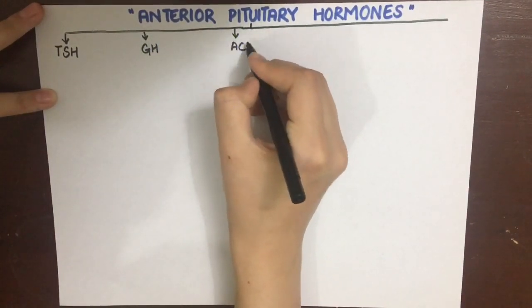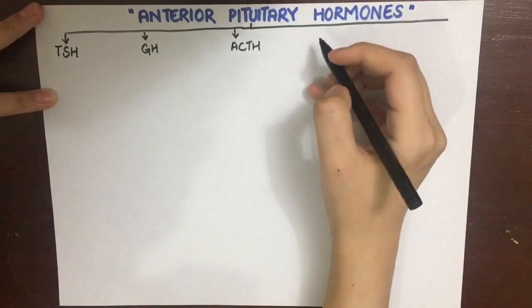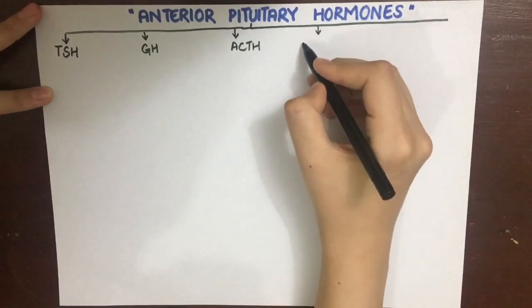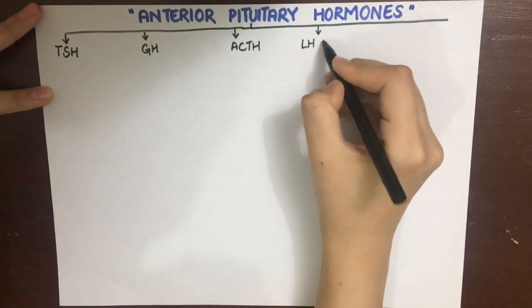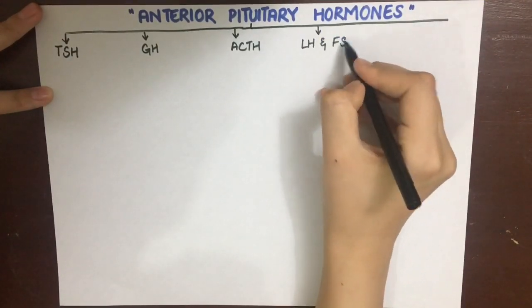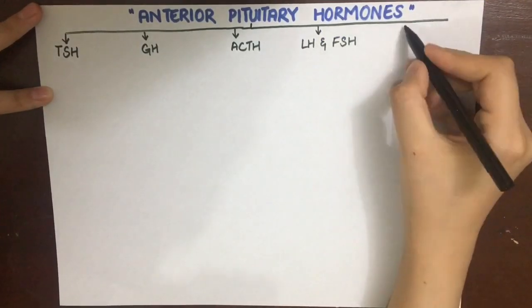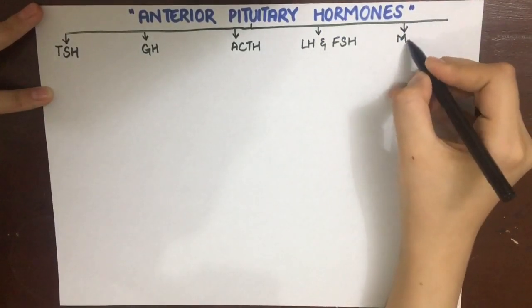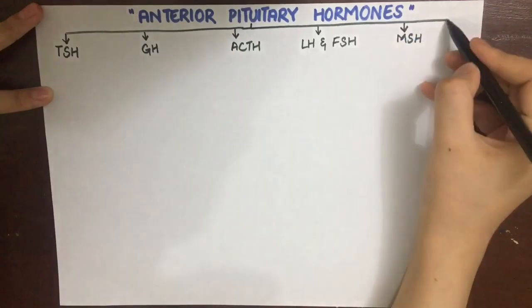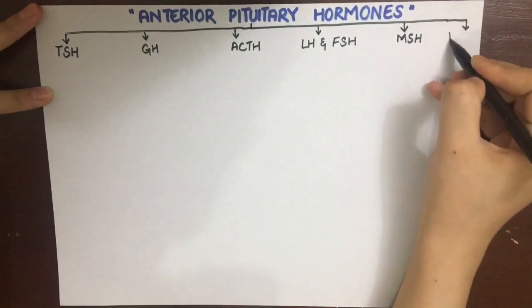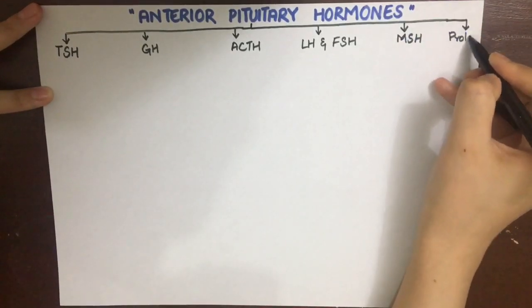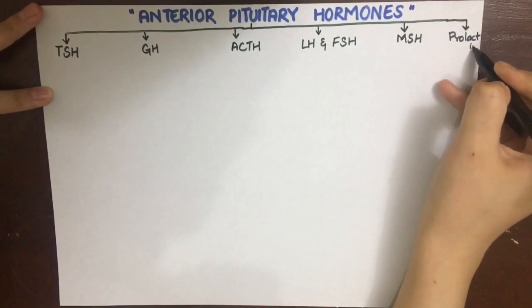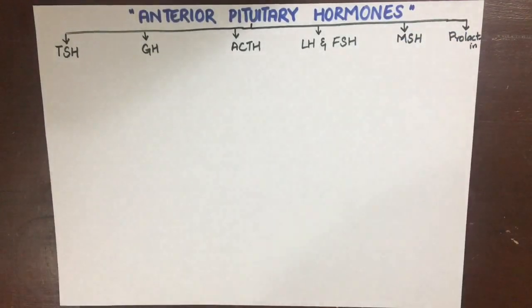We know that the anterior pituitary secretes thyroid stimulating hormone, growth hormone, adrenocorticotropic hormone, luteinizing hormone and follicle stimulating hormone, melanocyte stimulating hormone, and prolactin.